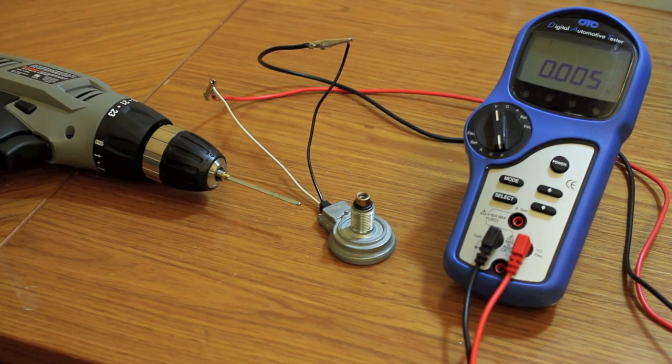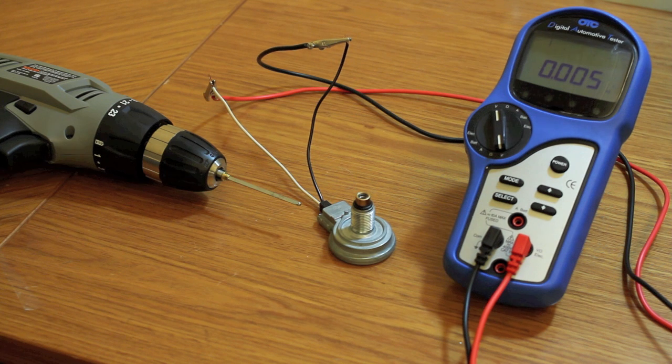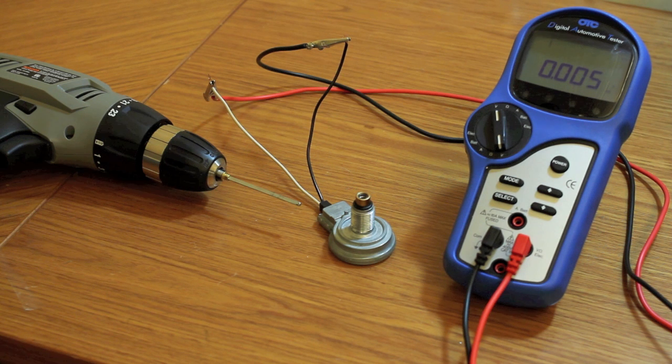Now our meter is going to be configured for AC voltage. Most everything on your vehicle is DC. In this particular instance we're testing AC, and that's the squiggle S looking wave pattern on manual meters.